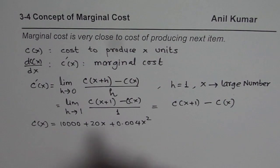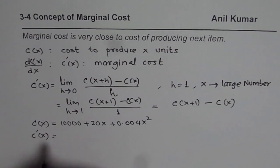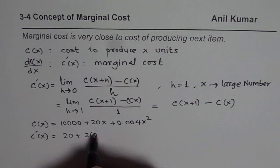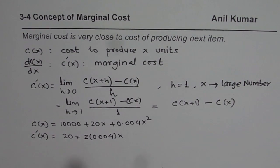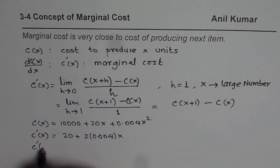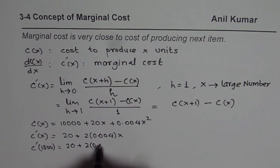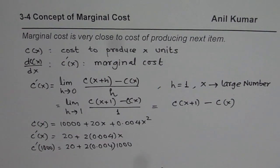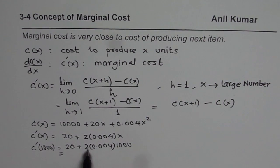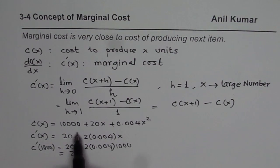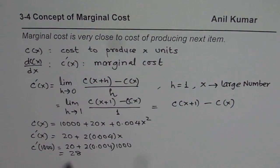To find the marginal cost at 1,000 items, we take the derivative of this function. The derivative of the constant is 0; for 20X it will be 20; and here we get 2 times 0.004 times X, which gives C prime of X equals 20 plus 0.008X. Now replacing X with 1,000: 20 plus 0.008 times 1,000 equals 28. So the marginal cost at a production level of 1,000 items is $28.